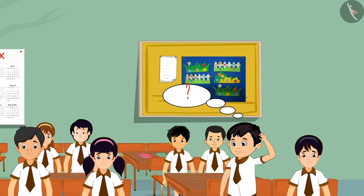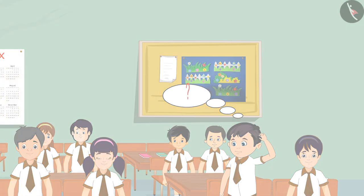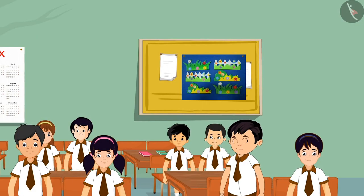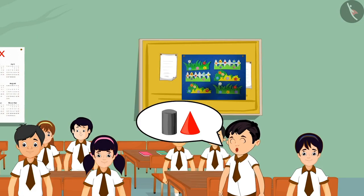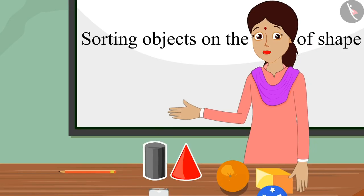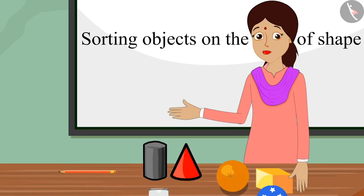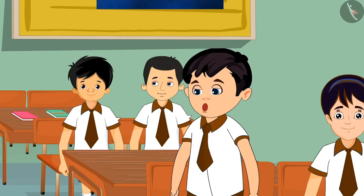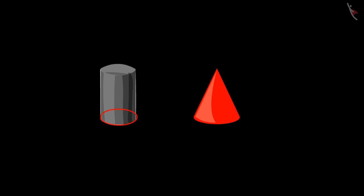But Chotu did not understand the difference between these two figures. He says: both these shapes look alike. The teacher asks: Chotu, why do you think these two shapes are the same? Chotu explains: this shape's base is round, and the other shape also has a round base.